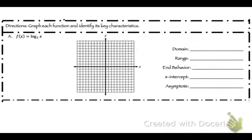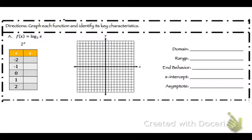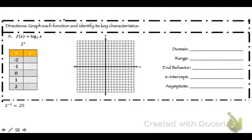Now let's get into graphing. We have f of x equals log base 2 of x. We can't really plot points easily for that, so we're going to use 2 to the x power instead — just ignore the log for now. Using x values of negative 2, negative 1, 0, 1, and 2: 2 to the negative 2 is 0.25, 2 to the negative 1 is 0.5, 2 to the 0 is 1, 2 to the 1 is 2, and 2 to the 2 is 4.